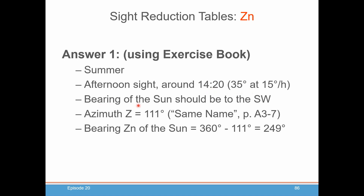The bearing of the sun, therefore — afternoon sight, a little after noon — so it's somewhere in the southwest. If you remember your compass rose, southwest is somewhere between 180 and 270 degrees. You go into the sight reduction tables, look up LHA, declination, latitude, and the azimuth Z in that table comes out at 111 degrees. We're in the same name — it's on page A3-7 if you could find it. For an afternoon sight in the northern hemisphere, you have to take 360 minus Z to get Zn: 249 degrees. Hey, that's between 180 and 270 — just about right, southwest. Congratulations.